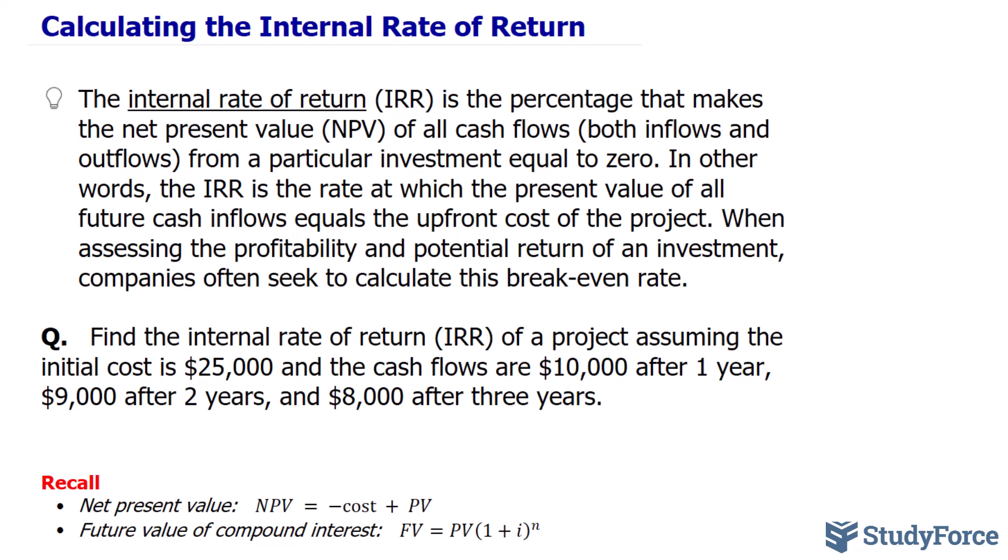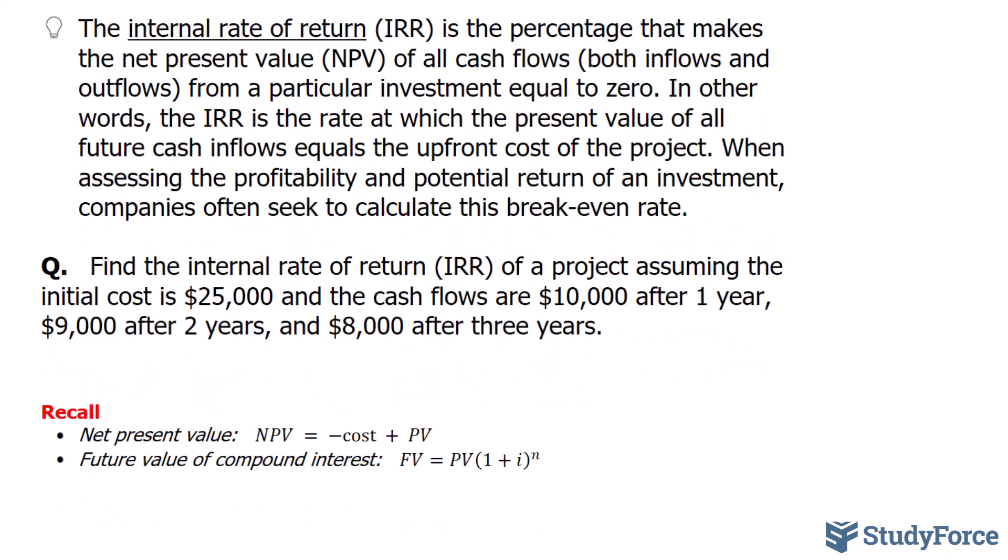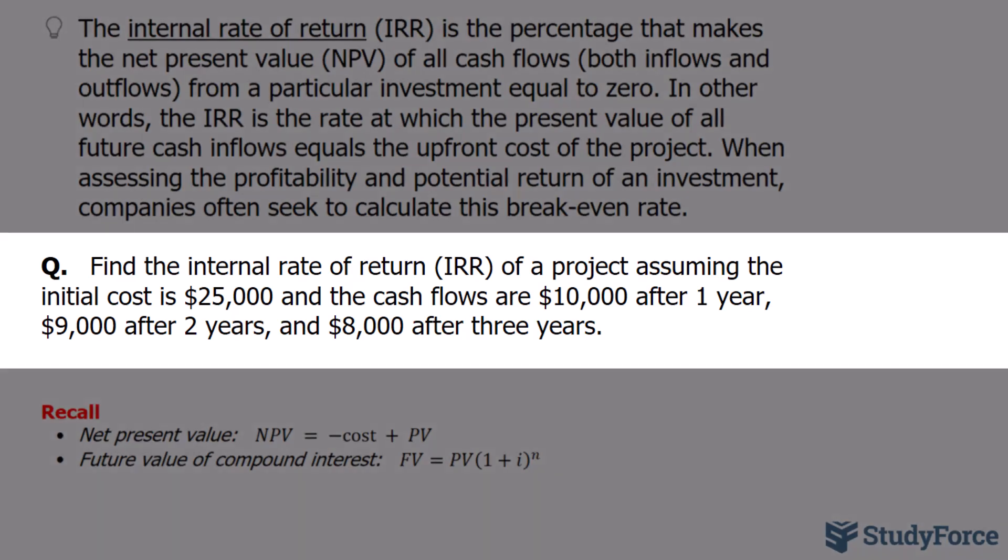To help illustrate what this all means, let's take a look at a scenario. We're being asked in the question, find the internal rate of return of a project assuming the initial cost is $25,000 and the cash flows are $10,000 after one year, $9,000 after two years, and $8,000 after three years.